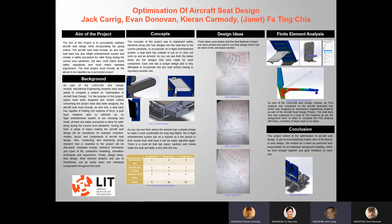Thanks Jack. The concepts of this project were to implement safety measures along with new designs. Four things were worked on: the armrest, the seat back tray, the entertainment system, and a niche cove kit located below the seat. The changes to each component were very drastic but very affordable. I'll pass you on to Evan to do design ideas next.